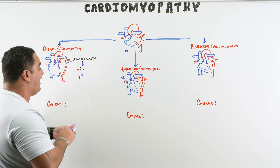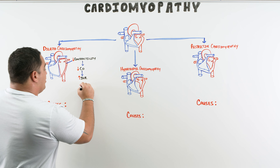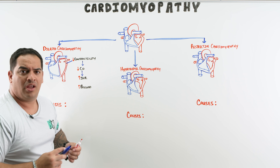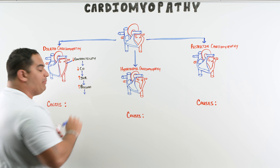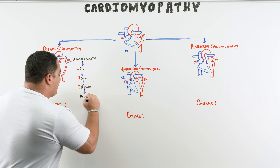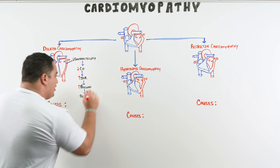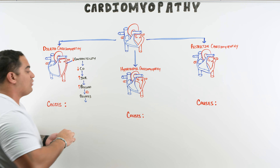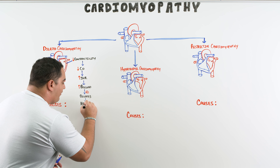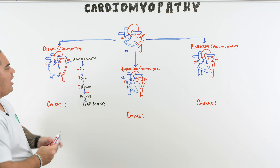If the heart is already weak and can barely get blood out, loading it up with even more preload causes it to dilate. Over time, that ventricular dilation thins the myocardium and makes it even weaker. This leads to a drop in ejection fraction — these patients develop systolic heart failure, also called HFrEF (heart failure with reduced ejection fraction), where the EF usually drops below 40%.